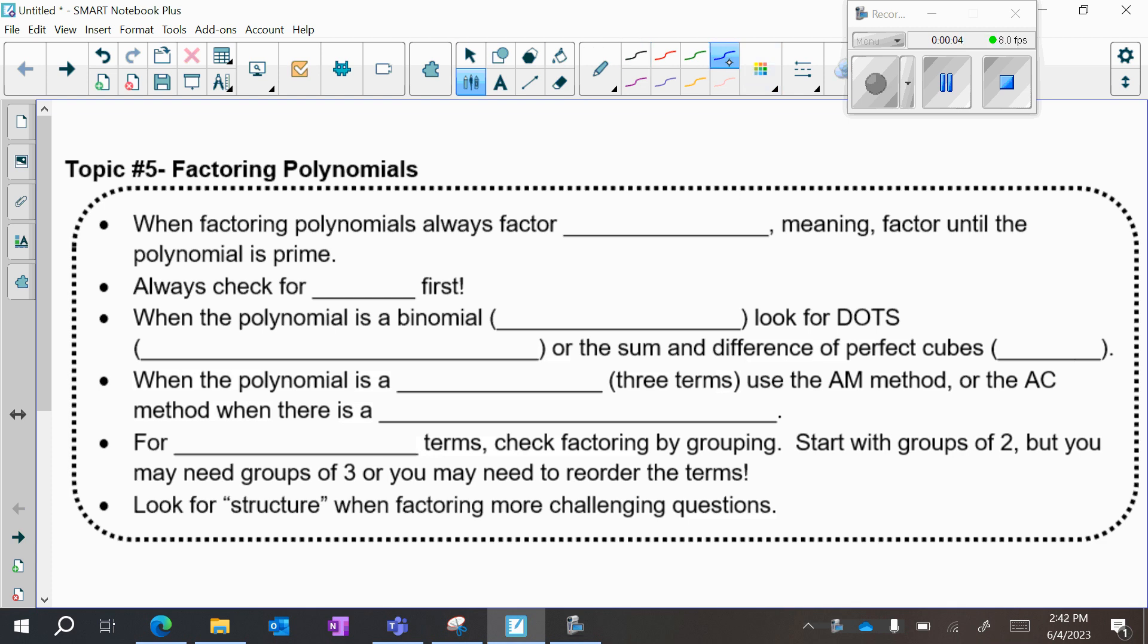Let's review factoring. When factoring polynomials, we always want to factor completely, meaning factor until the polynomial is prime and cannot be factored anymore.